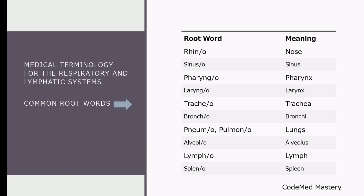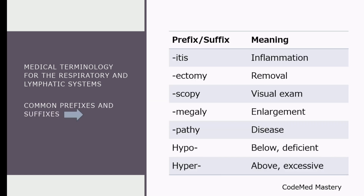Here are the common root words: rhino means nose, sinuso is sinus, pharyngeo means pharynx, laryngeo means larynx, tracheo is trachea, broncho means bronchi, pneumo or pulmono means lungs, and alveolo is alveolus. Lympho refers to lymph and spleno refers to spleen. It is quite simple.